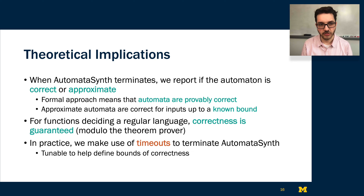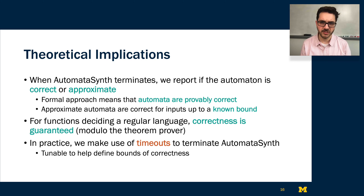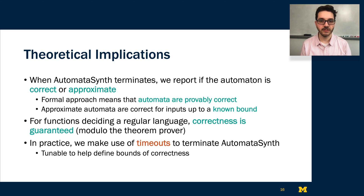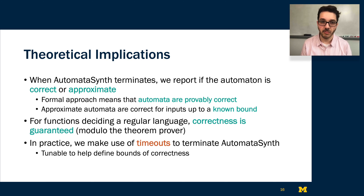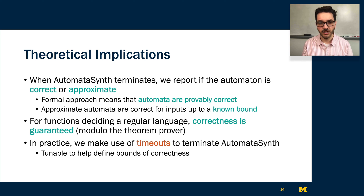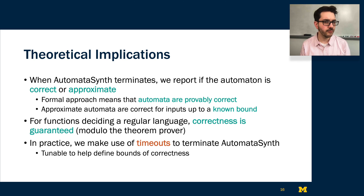The implications of our approach and formal results are that when AutomataSynth terminates, we can report whether the automaton is correct or approximate. When we report something as correct, it is provably correct. If we get an approximate automaton, we know it is provably correct for inputs up to some known bound that we report at termination. For functions deciding a regular language, we demonstrate that correctness is guaranteed modulo the relative completeness of the theorem prover. In practice, we use timeouts to terminate AutomataSynth, which allows us to tune the bounds of correctness — the longer we run it, the more likely we are to get a fully correct solution or an approximate solution provably correct for longer inputs.